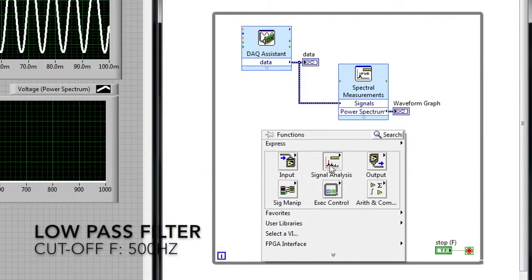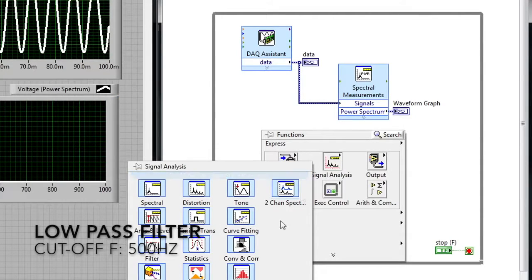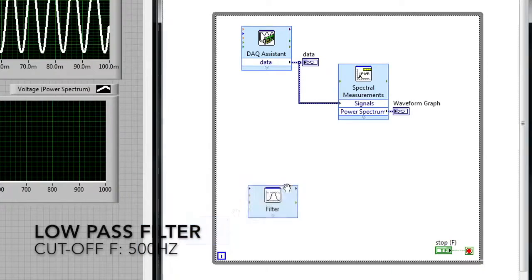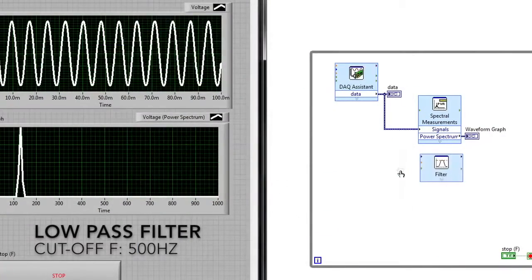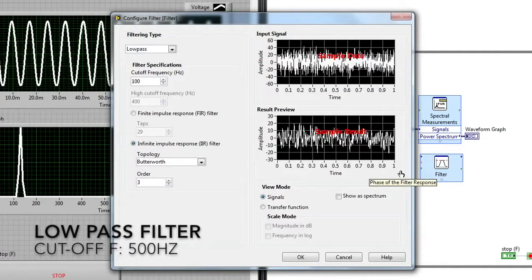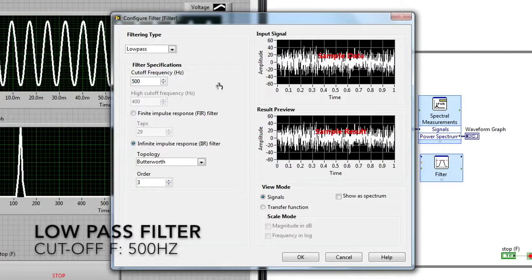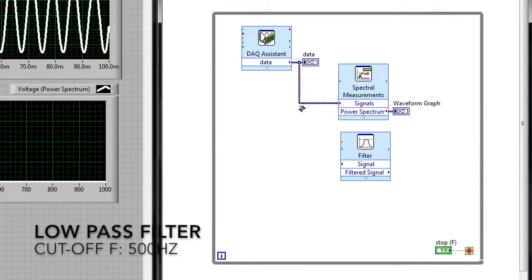We'd also like to add some filtering to the application, so I can right click on the block diagram, go back to the signal analysis palette, and then choose the filter Express VI. This Express VI gives you a number of different options for filtering. In this case, we're just going to add a pretty common low-pass type filter. I'm going to set the cutoff frequency at 500 Hertz and we can just leave the topology as a Butterworth filter.